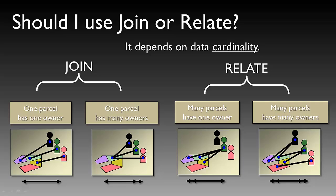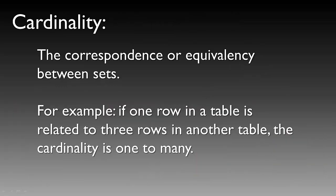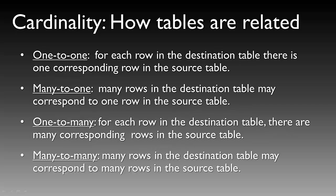On the left, you have two joins where one parcel has one owner, or one parcel has many owners. The relate example shows where many parcels have one owner, or many parcels have many owners. It's important to define cardinality as the correspondence or equivalency between sets. For example, if one row in a table is related to three rows in another table, the cardinality is one to many.